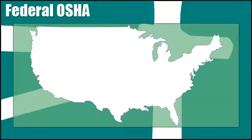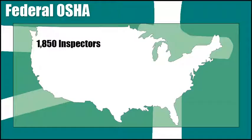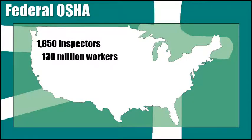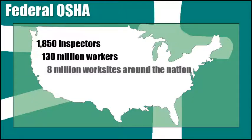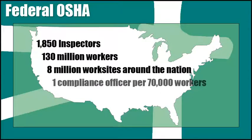Federal OSHA is a relatively small agency. With our state partners, we have approximately 1,850 inspectors responsible for the health and safety of 130 million workers employed at more than 8 million work sites around the nation. This translates to roughly one compliance officer for every 70,000 workers.